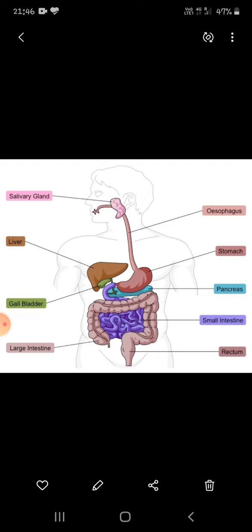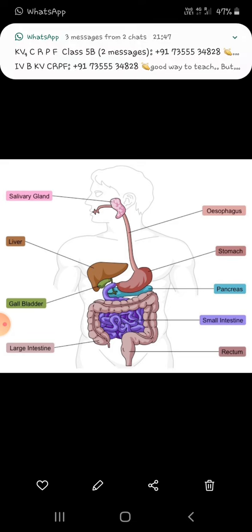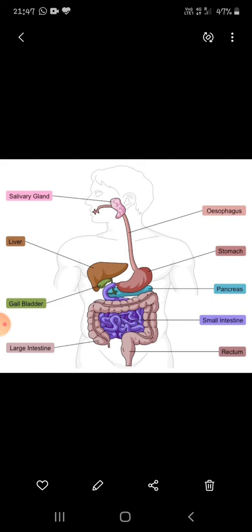The length of the small intestine is larger compared to the large intestine. The length of the small intestine is 7.5 meters and large intestine is 1.5 meters.